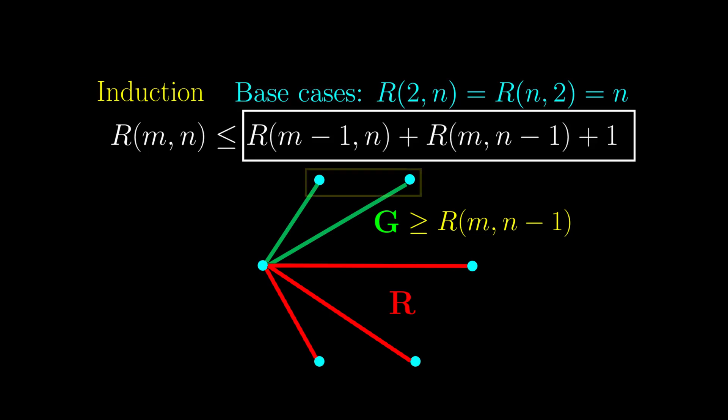Think about what it means. It means that among these g vertices, we can guarantee a group of m vertices all connected in red, or a group of vertices all connected in green.